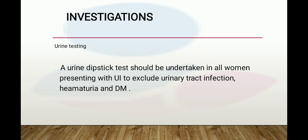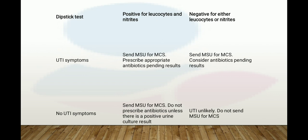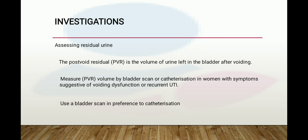In investigations, urine testing is performed first. A woman presenting with urinary incontinence is tested to exclude urinary tract infection, hematuria, and diabetes mellitus. We check a dipstick: if positive for leukocytes and nitrites, send an MSU and prescribe antibiotics. If there are no UTI symptoms, send an MSU but do not prescribe antibiotics unless there is a positive urine culture result.